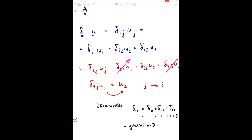In general, in n-dimensional cases, delta ii in n dimensions is simply n. So, in two dimensions, delta ii is 2.